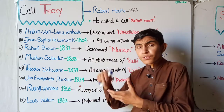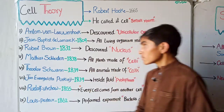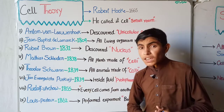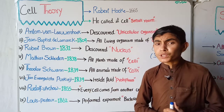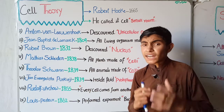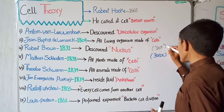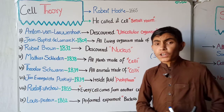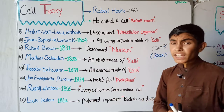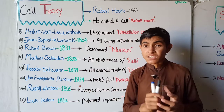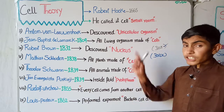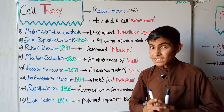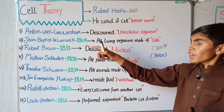First of all, Robert Hooke, an English scientist, in 1665 presented the first theory about the cell. He had a simple microscope under which he examined cork slices, magnifying them about 30 times — the maximum magnification of his microscope at that time. He saw some tiny microscopic structures and called them the building blocks of the cork slices. He named these structures 'cells.' Cell is a Latin word meaning 'small room,' so he said these small rooms together make up the cork slice tissue.